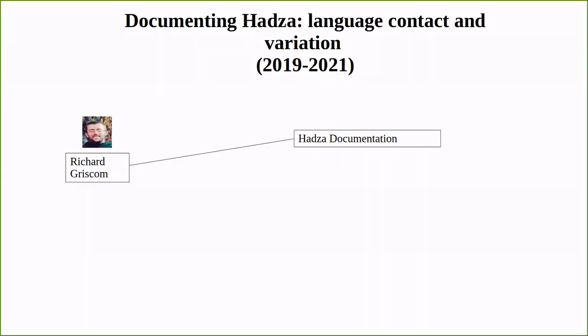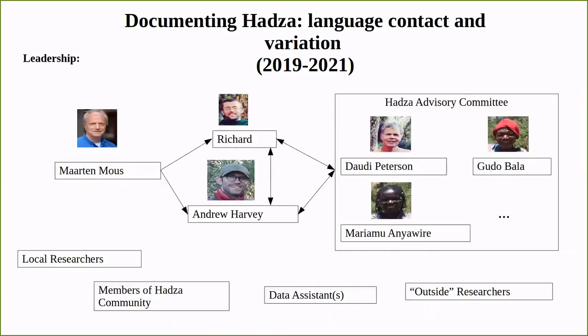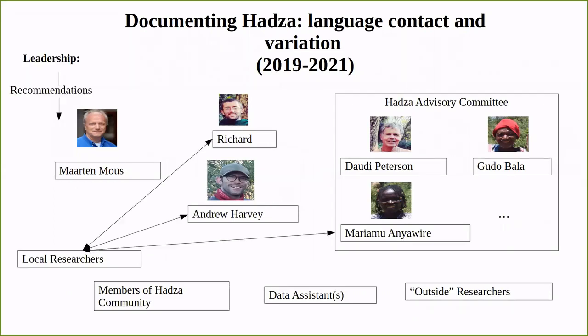First, I'd like to review our initial plans prior to starting the project. Andrew and I were awarded two postdoctoral fellowships from the Endangered Languages Documentation Program to start two documentation projects focused on the Hadza and Ihanzu languages, and also to build on the documentation of the Gorwa language that Andrew had already started. Martin Maus of Leiden University would serve as our supervisor, and we would facilitate the establishment of an advisory committee for each community if there was not one already. The committee would then advise us on how to proceed with our documentation efforts at various stages of the project.